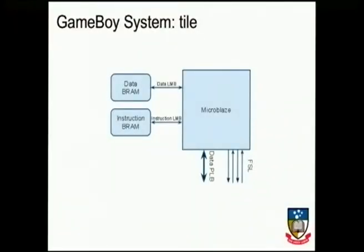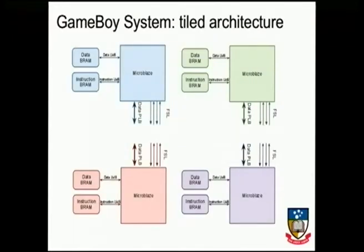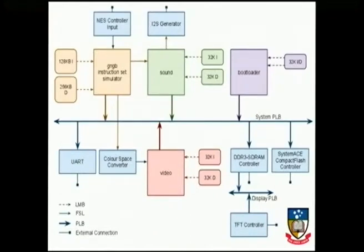The system has a NES controller for input, sound output they developed since it wasn't on the board, a frame buffer, and four processors. The Game Boy system started as a single processor tile with local memory, then cut-and-pasted to four processors each with dedicated functionality, glued together across a shared bus. The bootloader loads the ROM image from the compact flash card, then kicks off the Game Boy instruction set simulator, initially achieving about 10% performance — nowhere near playable.